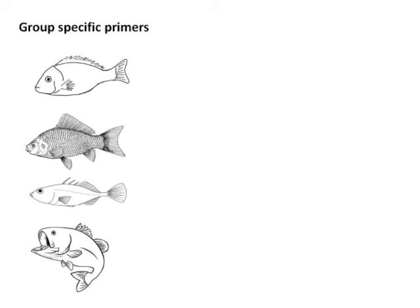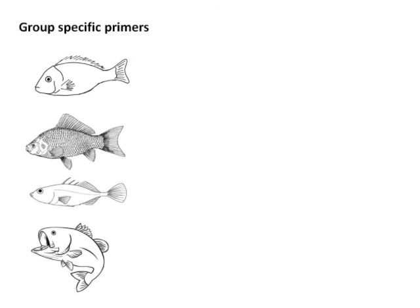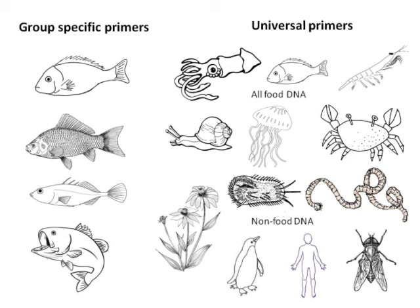Broadly speaking, two approaches are used for diet analysis. There are group-specific primers, which provide high taxonomic resolution of a specific prey group, such as fish or cephalopods. However, they don't allow all prey groups to be detected. If this is required, a universal primer is needed to identify all food groups. However, this primer identifies all eukaryotes, which means that non-food DNA is also detected.